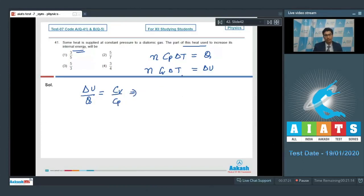Dear students, herein Cp by Cv in thermodynamics is equal to gamma. Therefore, Cv by Cp will be equal to 1 by gamma. We have to find out the value of therefore 1 by gamma.